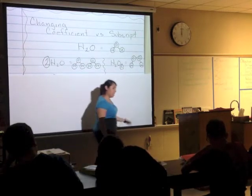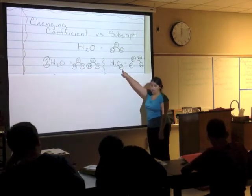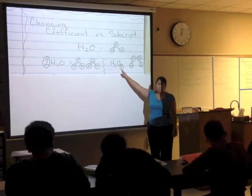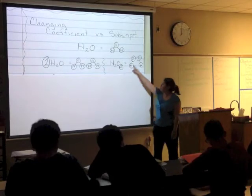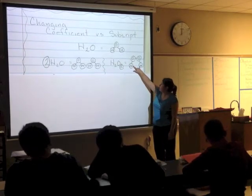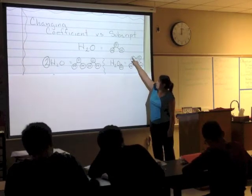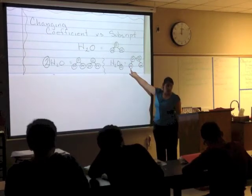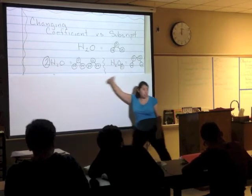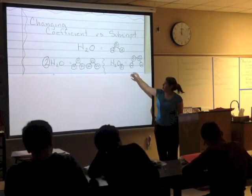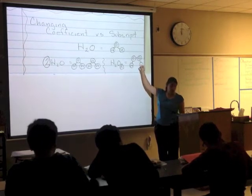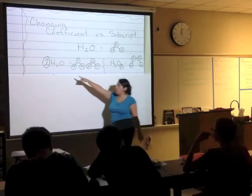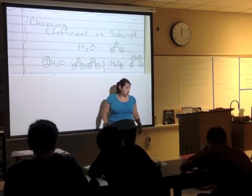Now if I add a subscript, what that means is that now I have two hydrogens, two oxygens, all stuck together. So I have my two hydrogens, my two oxygens, and they're all attached. So when you do a subscript, you're saying that those atoms are attached somehow. If you do a coefficient, you're just saying you have two of those.